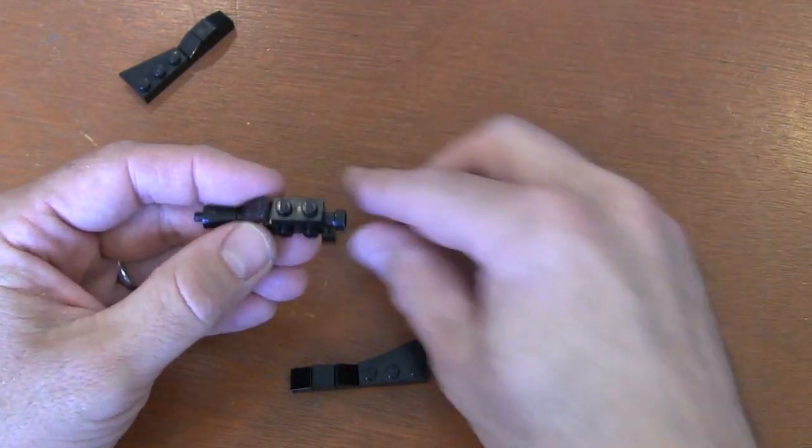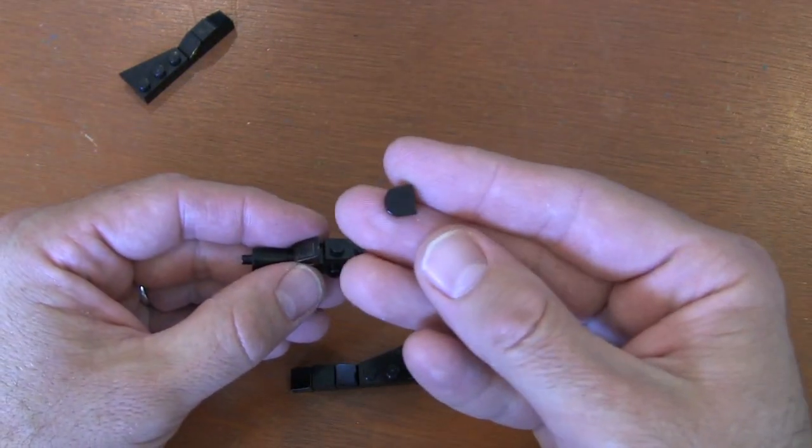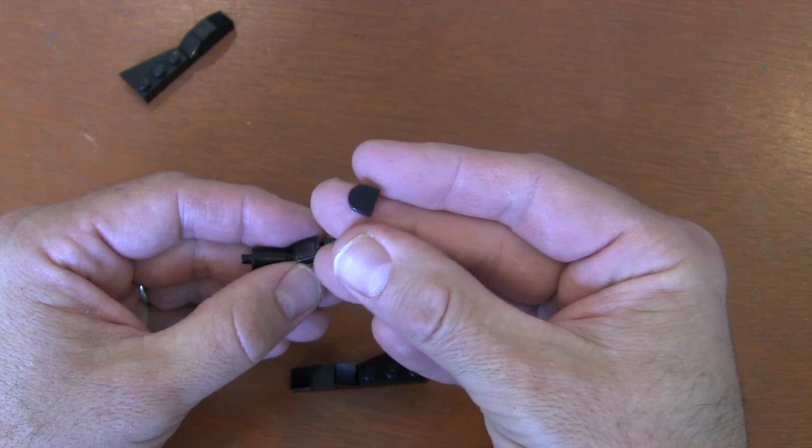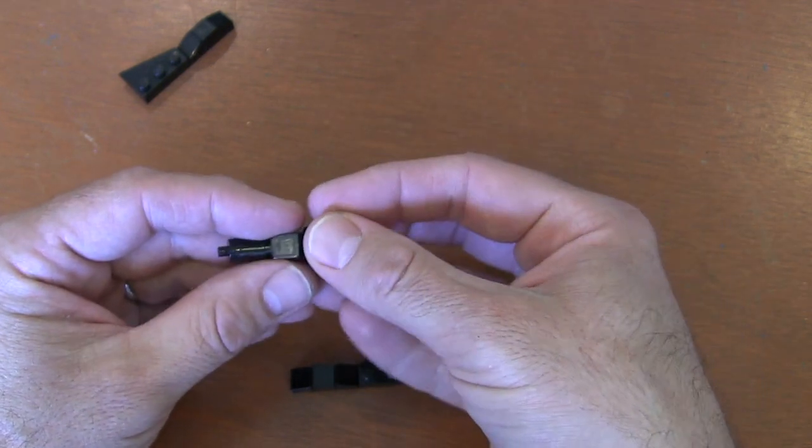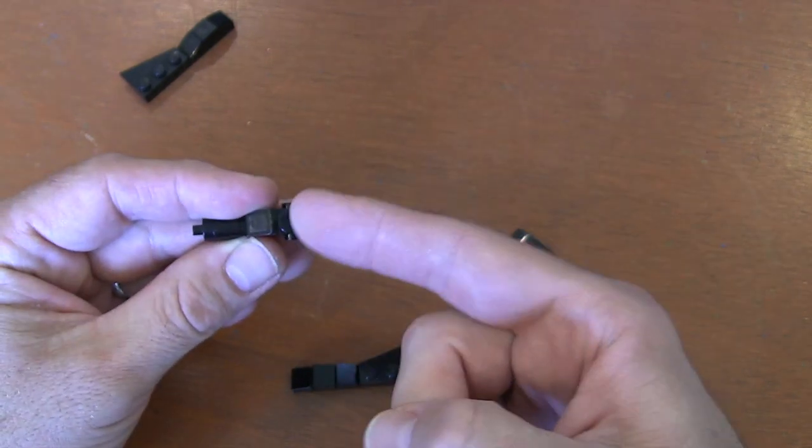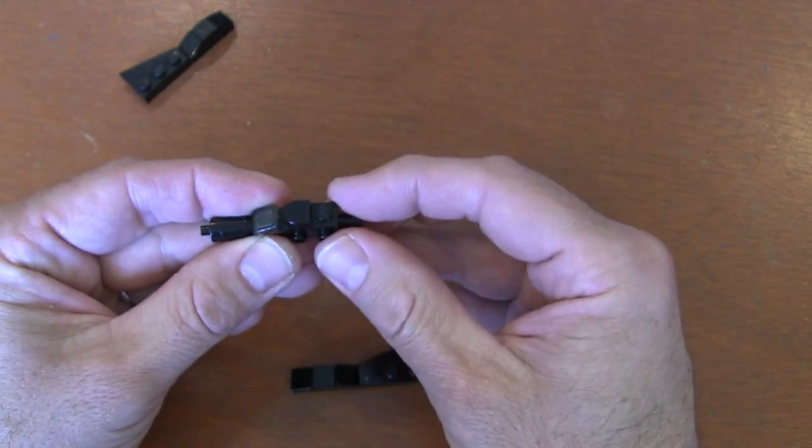Then to smooth it out and make it look more aerodynamic, I'm going to grab a 1x1 half circle extended tile piece. The rounded end goes near the cockpit on that front stud and the flat end is in the center of my 1x2 plate.